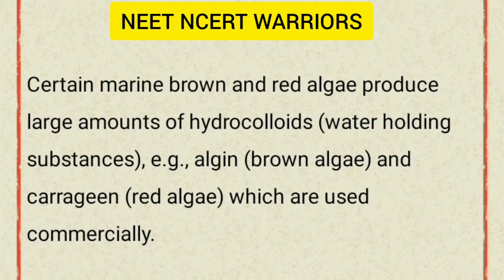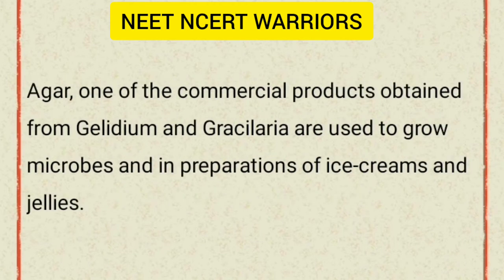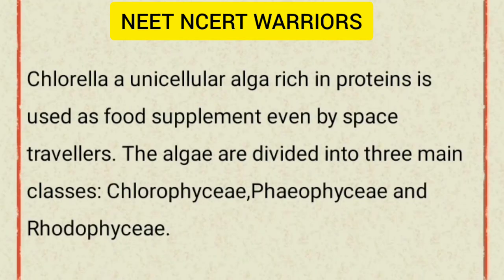Certain marine brown and red algae produce large amounts of hydrocolloids — water-holding substances — for example, alginate from brown algae and carrageenan from red algae, which are used commercially. Agar, one of the commercial products obtained from Gelidium and Gracilaria, is used to grow microbes and in preparations of ice creams and jellies. Chlorella, a unicellular alga rich in proteins, is used as a food supplement even by space travelers.